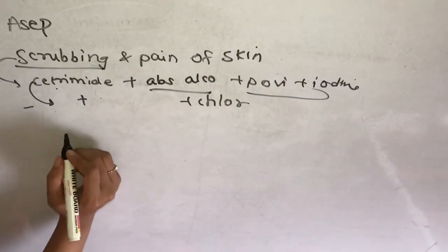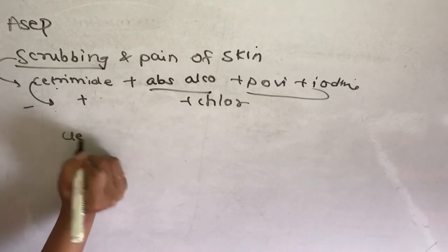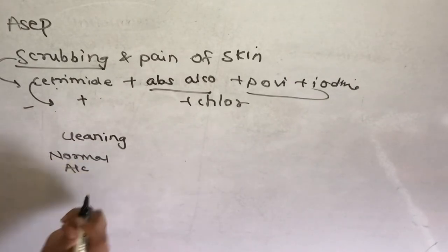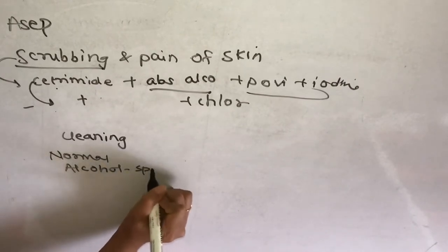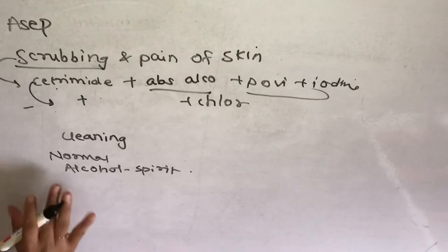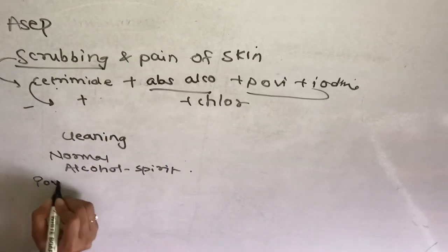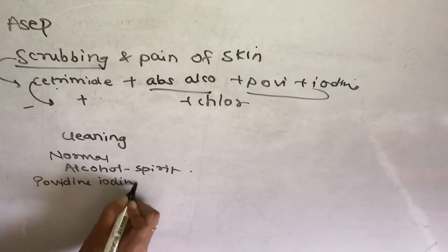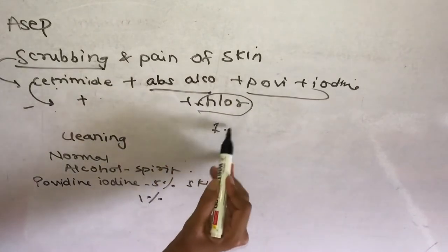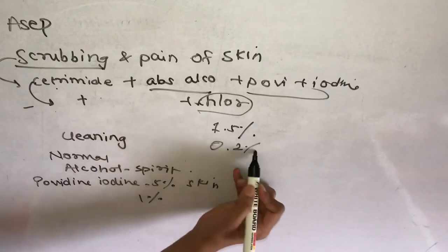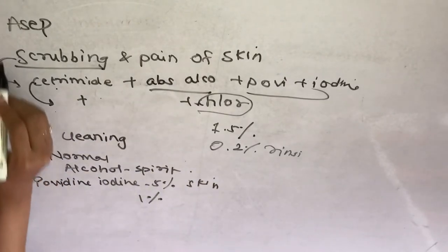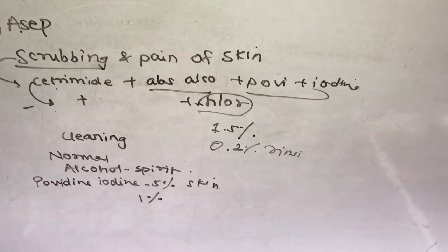Cleaning solutions are used on the skin to remove residual soap — normal saline or alcohol can be used. Painting solutions act topically to inhibit further microbial growth: povidone-iodine is used as a 5% solution for skin and 1% for oral mucosa; chlorhexidine gluconate is 7.5% for skin and 0.2% for rinsing the oral cavity. After painting, the patient is draped.